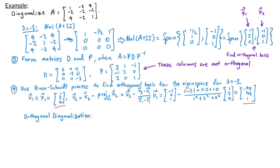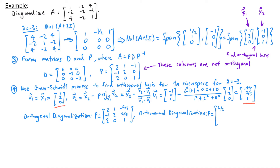So if we want an orthogonal diagonalization for A, we would have P equal to the columns 2, negative 1, 2 then 1, 2, 0 and negative 4 fifths, 2 fifths, 1. As mentioned in our last video, it's helpful to have orthonormal columns for P because it makes finding P inverse much easier. In the orthonormal diagonalization, we take each column of P and divide it by its length, giving P equal to 2 thirds, negative 1 third, 2 thirds, then 1 over root 5, 2 over root 5, 0, then negative 4 over root 45, 2 over root 45, and 5 over root 45.